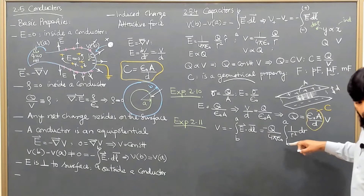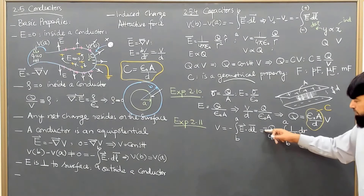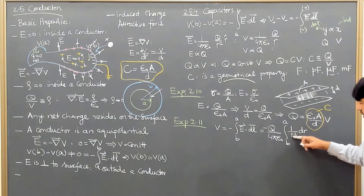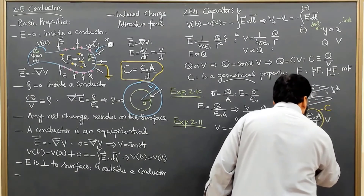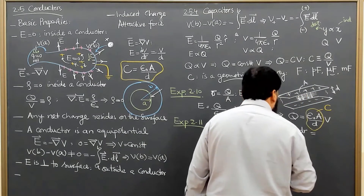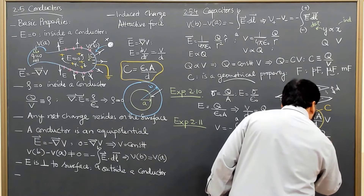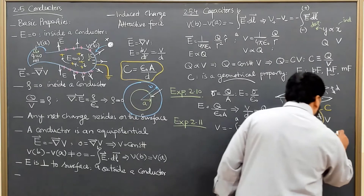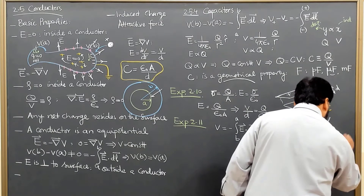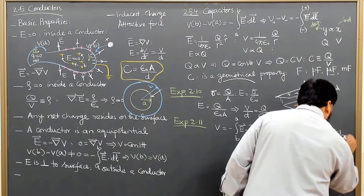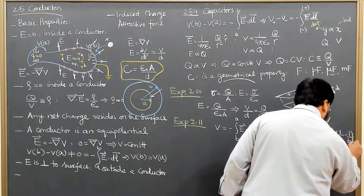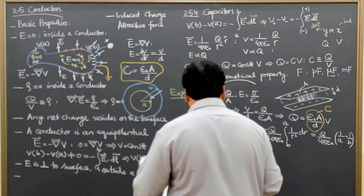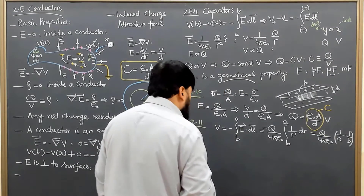We know that the integral of 1/R² gives minus 1/R. The two minus signs — one from the formula and one from the derivative — become plus. So we get Q over 4πε₀ times (1/A minus 1/B). This is the value of V.